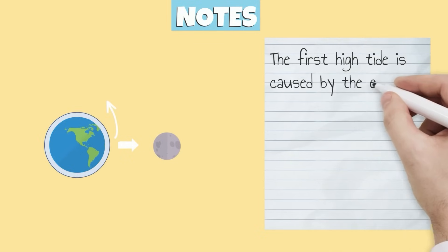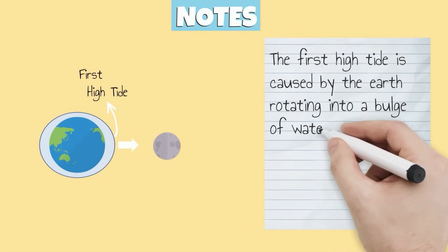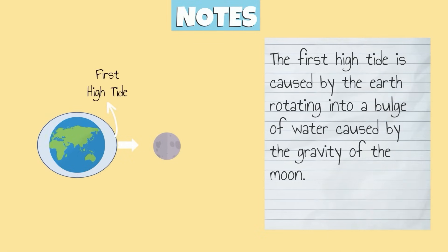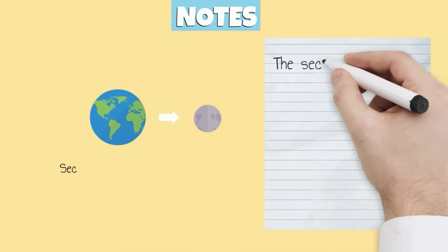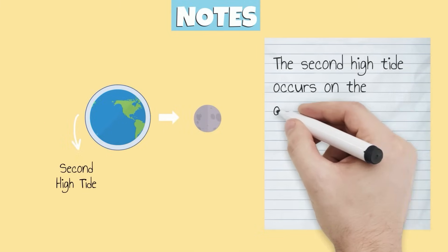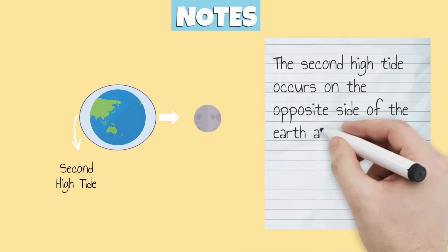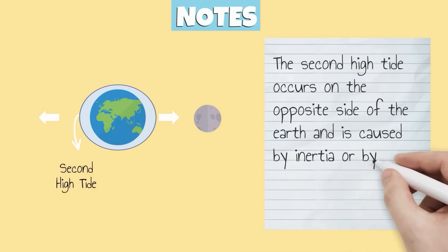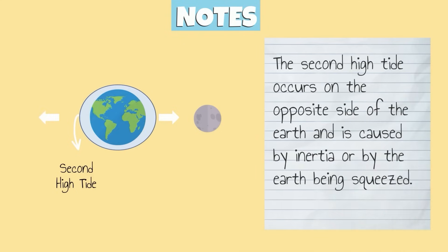The first high tide is caused by the Earth rotating into a bulge of water caused by the gravity of the moon. The second high tide occurs on the opposite side of the Earth and is caused by inertia or by the Earth being squeezed.